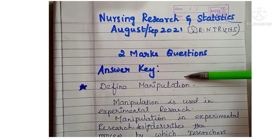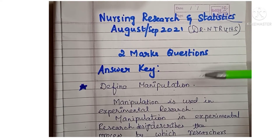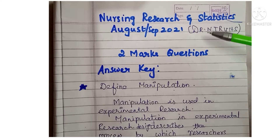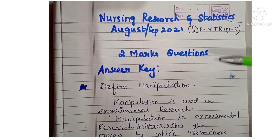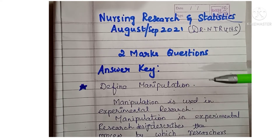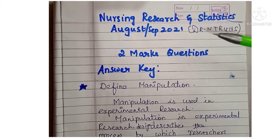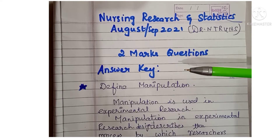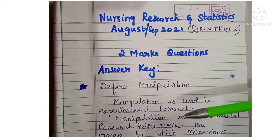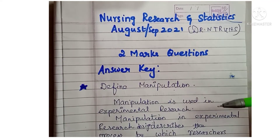The first question asked is: Define Manipulation. If you have any doubt about whether these questions are genuine from the August 2021 question paper, I have given the question paper link in the description box. You can also watch our channel playlist for BSc Nursing question papers — the August 2021 supplementary question paper for Nursing Research and Statistics has already been posted there.